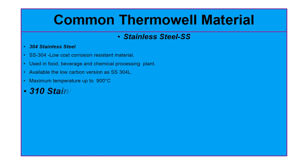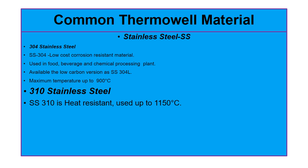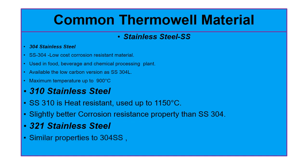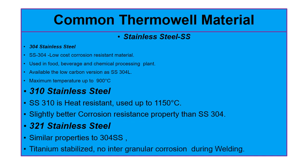Grade 310 stainless steel: SS 310 is heat resistant and can be used up to 1150 degrees centigrade. The corrosion resistant property of SS 310 is slightly better than SS 304. Grade 321 SS: SS 321 has similar properties as SS 304, except this grade is titanium stabilized, which prevents intergranular corrosion during welding.